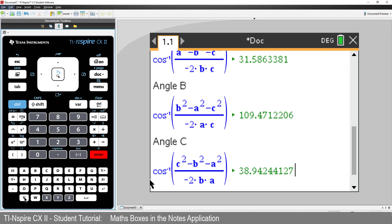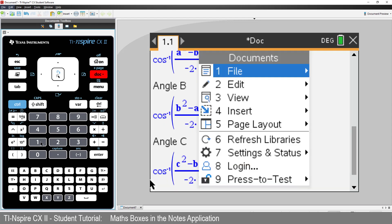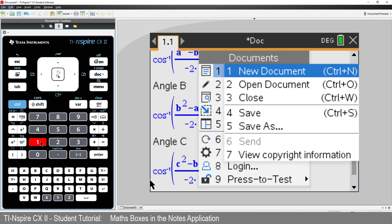Now that we've taken the time to create such a useful notes application, you can save it. First of all, I'll save this just as a regular TI-Nspire file. I'll use a document key, select file, and save as.